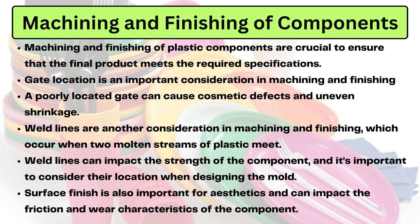Next, we have machining and finishing of the component. Machining and finishing is important for aesthetic purposes and to meet required product specifications. Gate location is a very important consideration, because poorly located gates can cause cosmetic defects and uneven shrinkage. Weld lines are another consideration — when two plastic flows meet at one point, a weld line forms. Weld lines primarily affect the aesthetic look of the product, but can also impact component strength if they are too weak.